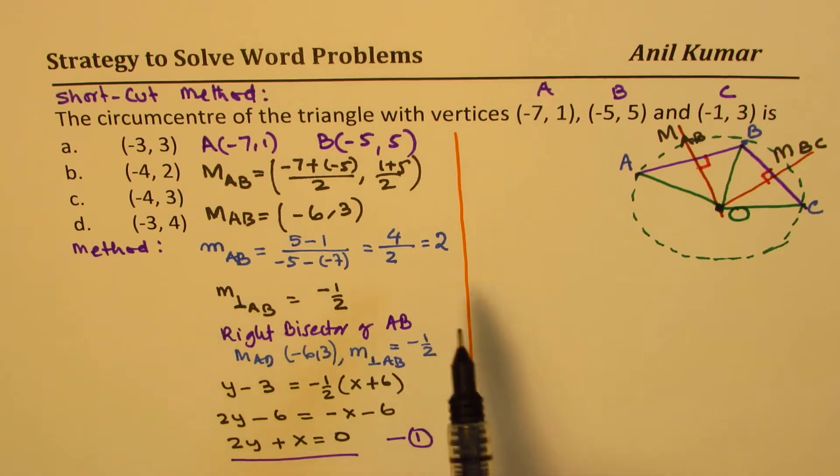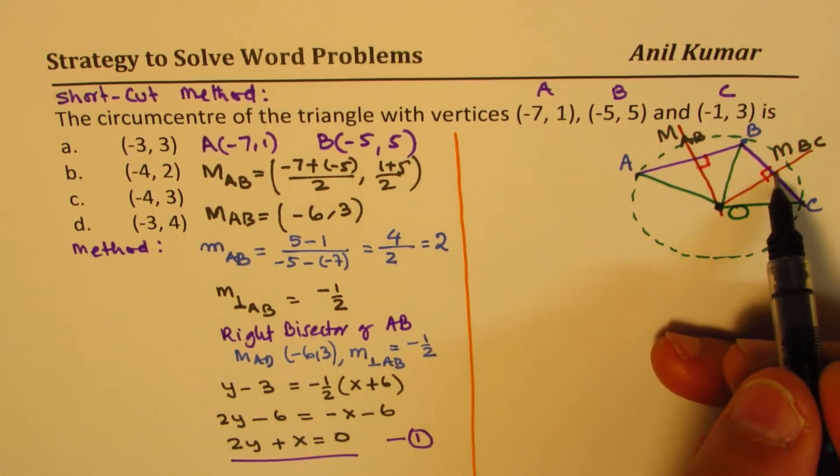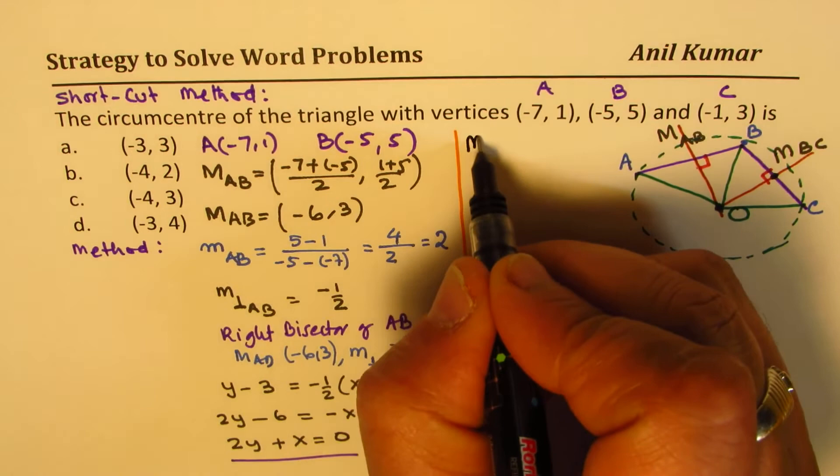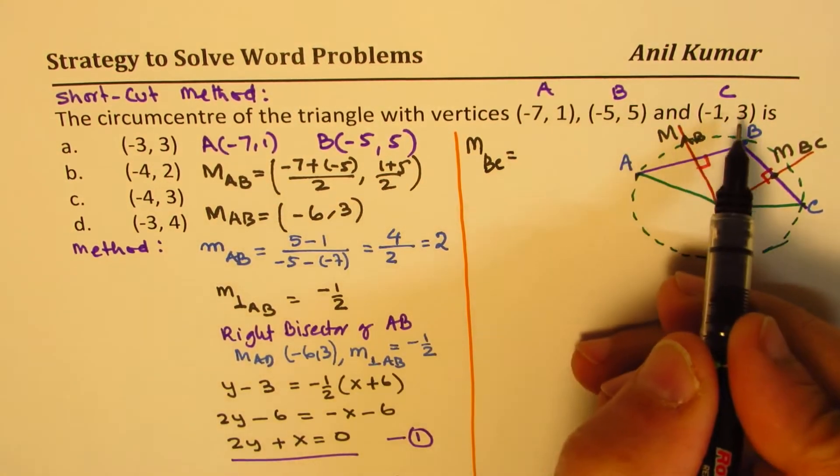Now, let's do it in shortcut. We will now find what is the midpoint of BC. So midpoint of BC is what? b to c.